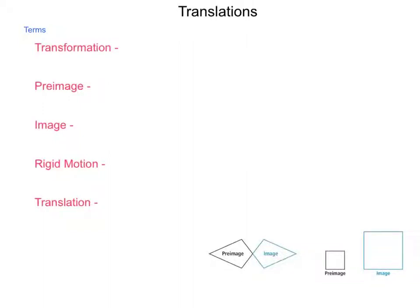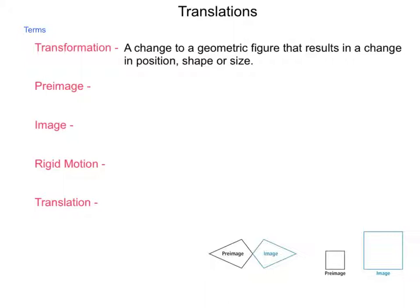In this lesson, we're going to be learning about translations. To begin with, we're going to have a front load of information on vocabulary for translations specifically and transformations in general. First, a transformation is a change to a geometric figure that results in a change in position, shape, or size, and through this unit we're going to look at each of these in turn. When we talk about transformations, we talk about two different figures in that process. The first is the preimage, which is simply the original figure of the transformation. The other is the image, which is the resulting figure from a transformation.